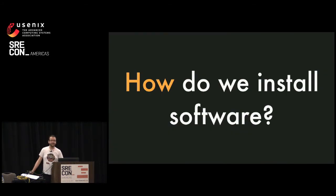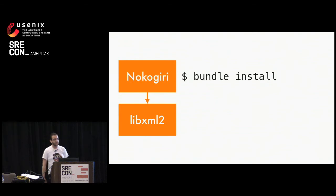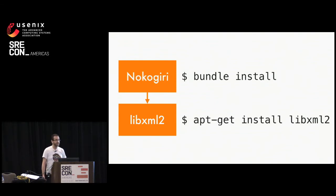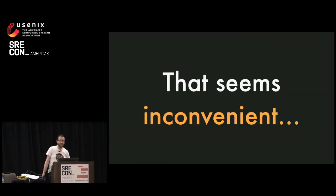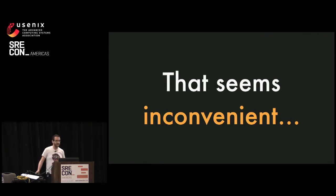Which leaves us with a question: how do we install software? It seems like the dumbest question in the world, but it's relevant. We've got two things to install. Nokogiri comes through the Ruby tool called Bundler. Native dependencies tend to come from something like apt-get or an RPM-based install mechanism — the native OS package manager. These are usually controlled by two different codebases in your organization. Your language dependencies end up in the source repository of your app code, whereas LibXML2 is in some config management like Chef or Puppet. The SRE team tends to look after the config management codebase, and you'll have separate dev teams each with their own application codebases. You have to remember to update those two things in lockstep and make sure you don't pick incompatible versions.